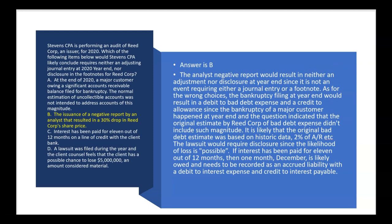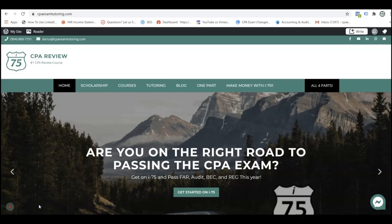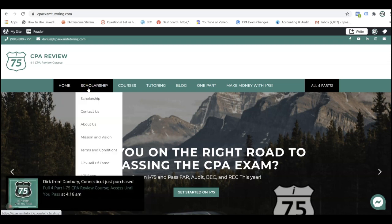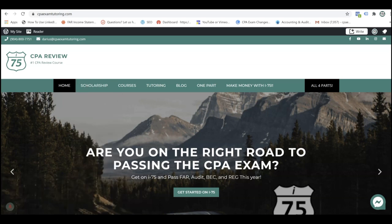The first two questions we just did were related to each other — they covered journal entries, accrued liabilities, footnote disclosures, and loss contingencies: what has to be disclosed, what has to be booked as a journal entry, and what doesn't. I guarantee you're going to see something like that on your audit exam. I'm so sure that if you don't see it, I want you to hit me up at CPAexamtutoring.com, home of the I-75 course, because it's always on the audit exam.